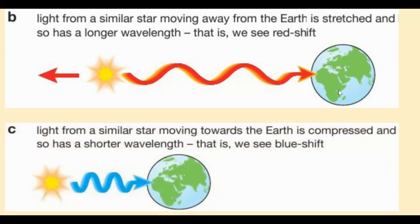Again, comparing it with light from a similar star moving towards the Earth, the light spectrum is compressed so the wavelength is shorter and therefore has higher frequency. This is what we refer to as the blueshift.